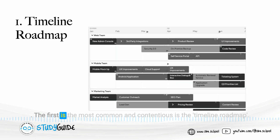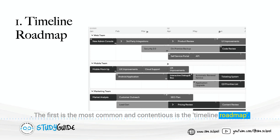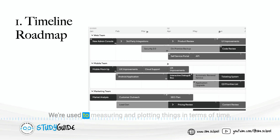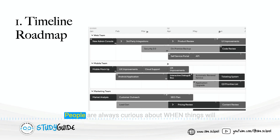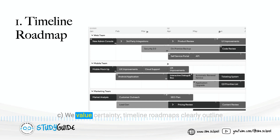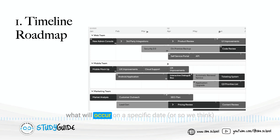The first, and most common and contentious, is the timeline roadmap. For several reasons, this is the most common format: we're used to measuring and plotting things in terms of time, people are always curious about when things will be completed or when they'll receive something, and we value certainty. Timeline roadmaps clearly outline what will occur on a specific date.